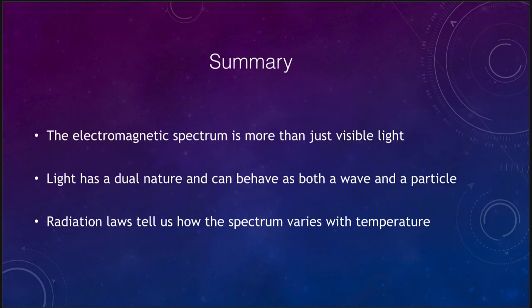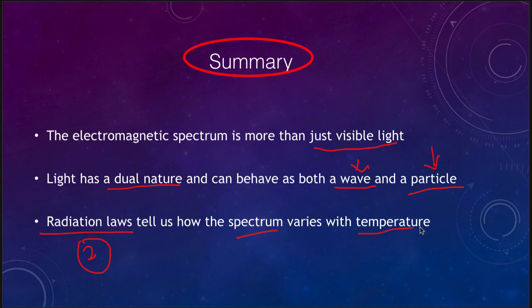So finishing up with our summary here, what have we gone over? Well, the electromagnetic spectrum itself is more than just visible light. So it is not just the visible light, but it includes all of those other parts that we see: x-rays, gamma rays and radio waves as some examples. We talked that light has a dual nature. It behaves as a wave and a particle simultaneously. Various observations that we make of light can only be explained if it's a wave and others can only be explained if it's a particle, and that gives light this dual nature. And finally, we looked at two radiation laws that tell us how the spectrum will vary with the temperature. Hotter objects giving off more energy and more high energy radiation.